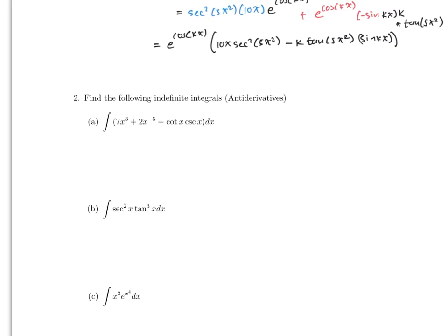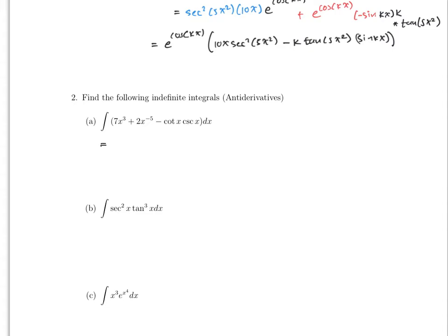Number 2 is just antiderivatives. The antiderivative of 7x³ will be 7x⁴ over 4. The next one will be 2x to the negative 5 plus 1 over negative 5 plus 1. And the antiderivative of minus cotangent cosecant — cosecant is just plus cosecant, right? The derivative of cosecant is minus cotangent cosecant. So this will give you that part, plus c. Then simplify: 7/4 x⁴, plus 2x to the negative 4 over negative 4, plus cosecant x plus c.